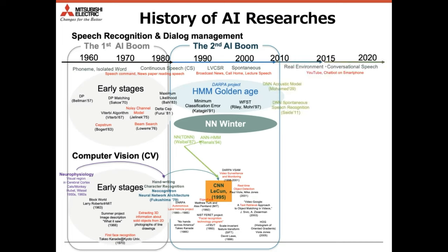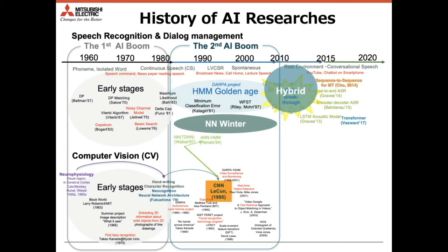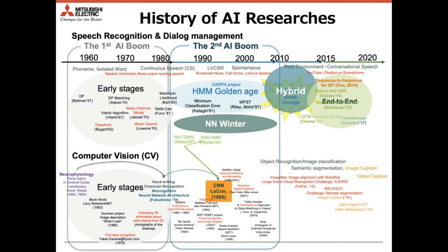The TDNN gave impact to the convolutional neural network, expanded to build 2D information signals. Then we had a breakthrough for neural networks — suddenly 10% of error was reduced by deep neural network-based acoustic models. Systems became hybrid, with deep neural network acoustic models but WFST-based decoders. The sequence-to-sequence model for machine translation was proposed by Professor Cho, which had great impact in speech, allowing end-to-end speech recognition. In computer vision, object recognition, semantic segmentation, video captions, and action recognition were investigated, with both static image and video processing targeted.